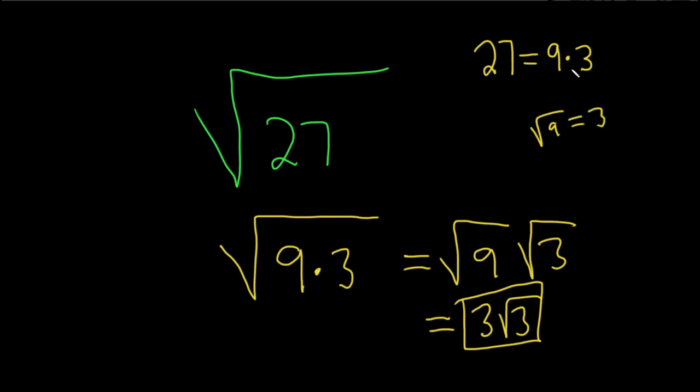Well, 9, right? So 9 is called the perfect square. So another way to say that is, what are the factors of 27 that are perfect squares? You're looking for those, and then you want to factor it that way, then break it up, and you should be good.